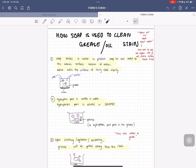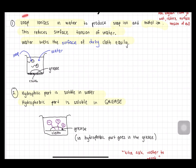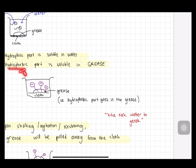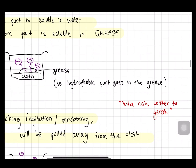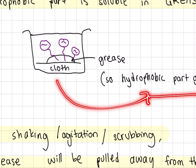How is soap used to clean grease or oil stains? Step by step: soap ionizes in water to produce soap ion and metal ion. This reduces the surface tension of water, and when the surface tension is reduced, water is able to wet the surface of the dirty cloth easily. The hydrophilic part — soluble in water — faces the water, whereas the hydrophobic part — soluble in grease — goes into the grease on the cloth.